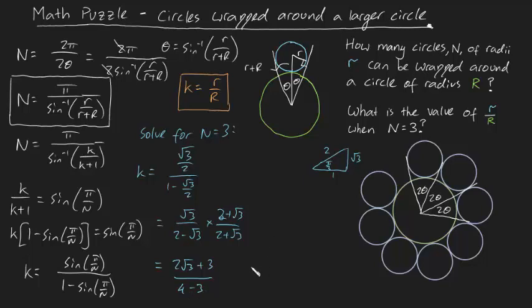So in fact, you can say our final answer is r/R is going to be equal to 3 + 2√3. That is our answer.